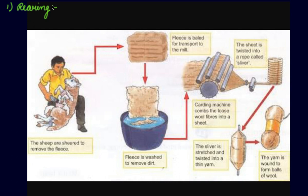Sheep are mainly reared in areas with low rainfall. In India, they are mainly reared in the hills of Jammu and Kashmir, Himachal Pradesh, Uttarakhand, Arunachal Pradesh, and Sikkim. Sheep mainly have a lifespan of about 10 to 12 years.